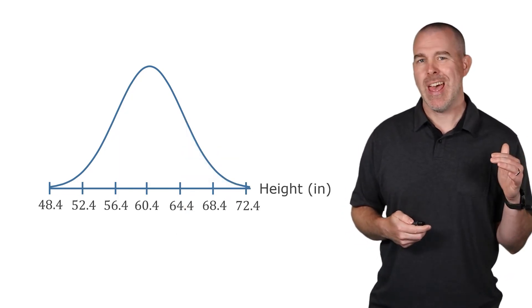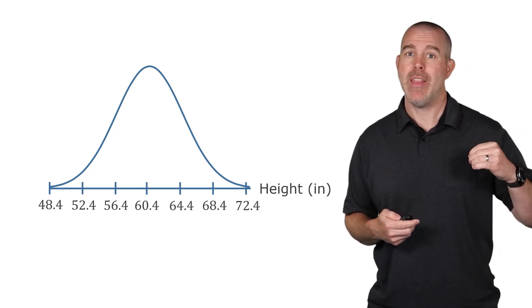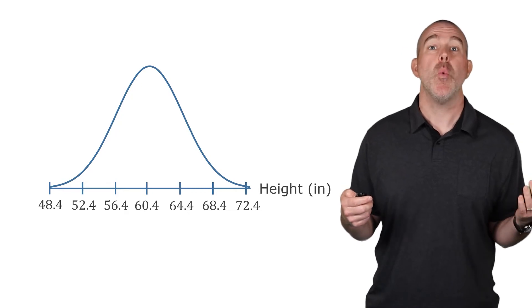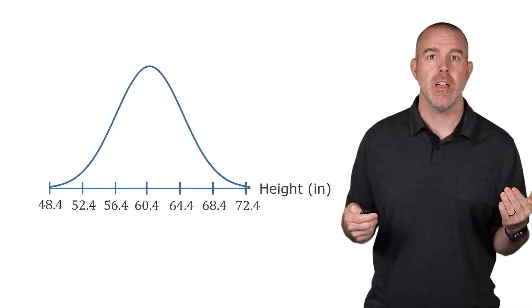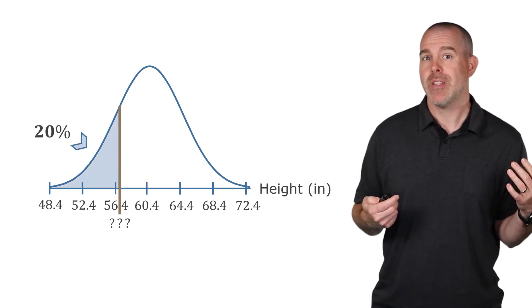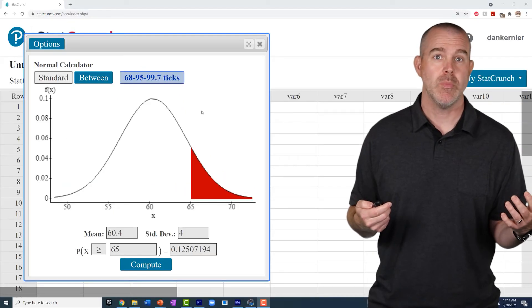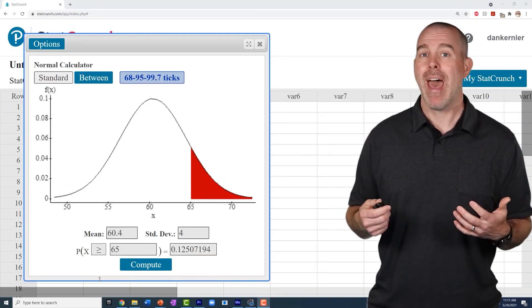What if instead, we know the probability, and we want to find the corresponding value? Say for example, the 20th percentile. That's the value over there on the left that has 20% to the left, or an area of 0.2. This is just as easy in StatCrunch.